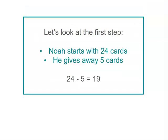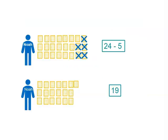So let's look at our first step. Noah starts with 24 cards and he gives away five, so we're subtracting five from Noah's total. 24 minus five equals 19. So let's see what happens at the end of the first step — Noah had 24, he had five cards that were given away, so at the end of the first step he's got 19 cards.